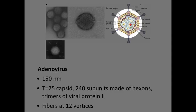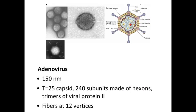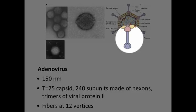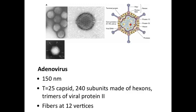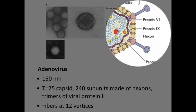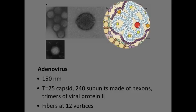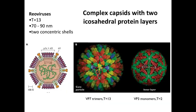Adenovirus also has additional proteins at each fivefold axis — fibers with knobs at the end. At each of the 12 fivefold axes, there's one of these fibers with a little tip, and that's what attaches to the cell receptor. This doesn't contribute to the basic shell structure but is an accessory protein needed to attach to a cell receptor. You can also see lines in between the hexons — those are so-called glue proteins thought to hold these proteins together. And in the interior of the capsid where there's viral DNA, there are proteins that bind the DNA. That's one example of how a more complicated capsid requires other proteins as well.